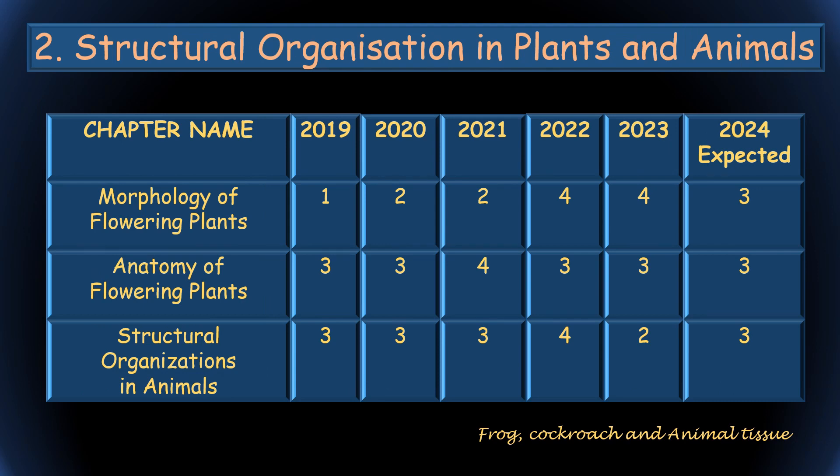The second unit — Structural Organization in Plants and Animals — has three chapters: Morphology of Flowering Plants, Anatomy of Flowering Plants, and Structural Organization in Animals. In 2023, four questions came from Morphology of Flowering Plants; this year three are expected. Anatomy of Flowering Plants is also expected to give three questions, and Structural Organization three questions. Additionally, Frog, Cockroach, and Animal Tissue have been added this year.